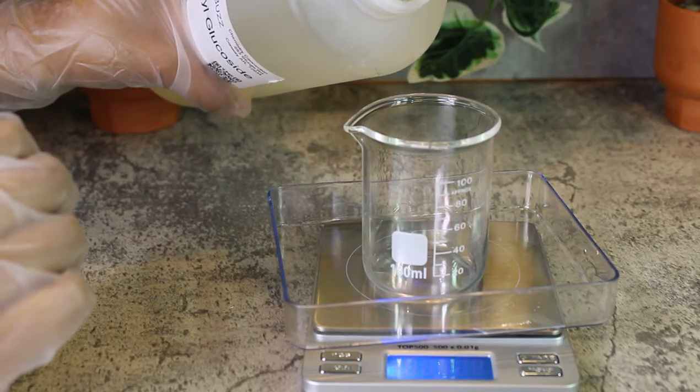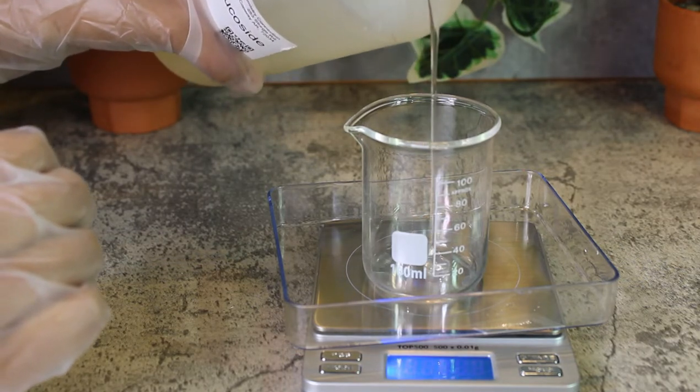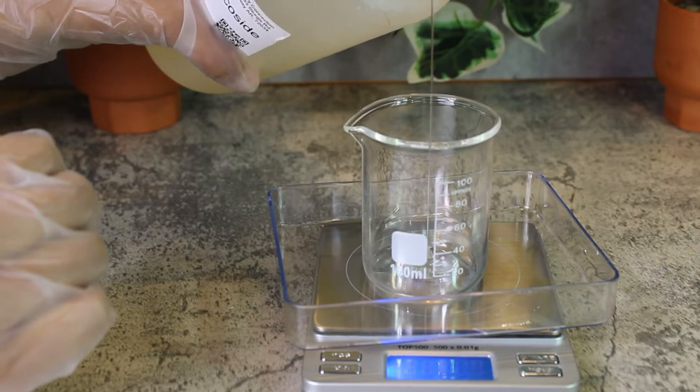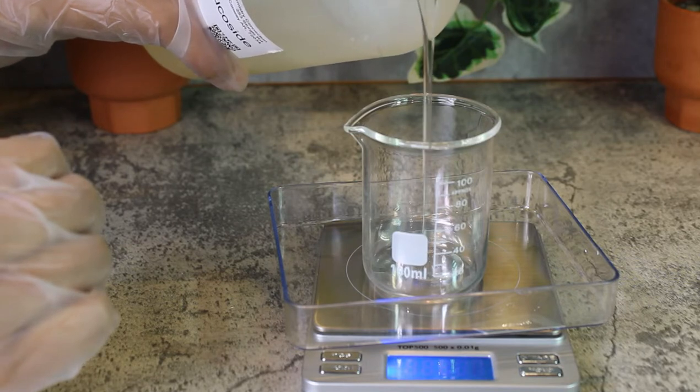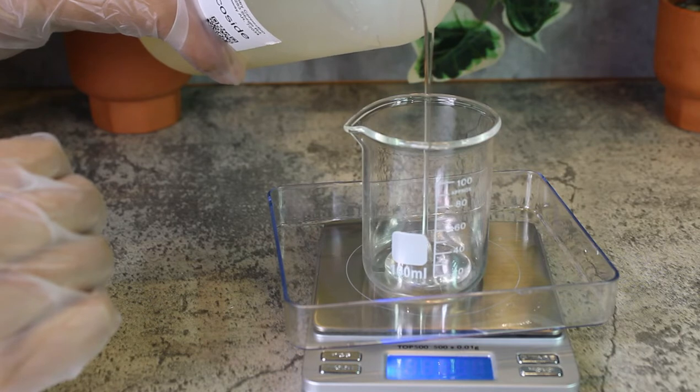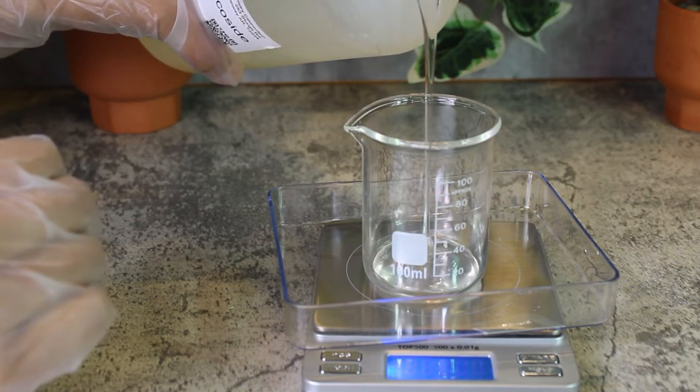But anyways, going to Phase C, I am using coco glucoside which is a mild solubilizing non-ionic surfactant that is obtained from fatty alcohols and also glucose from vegetable origin.